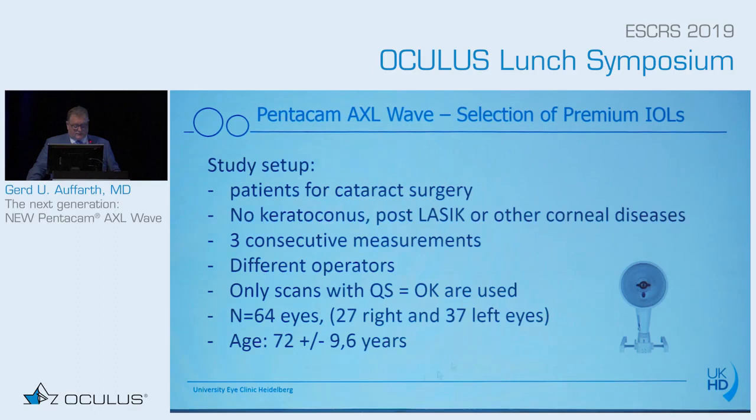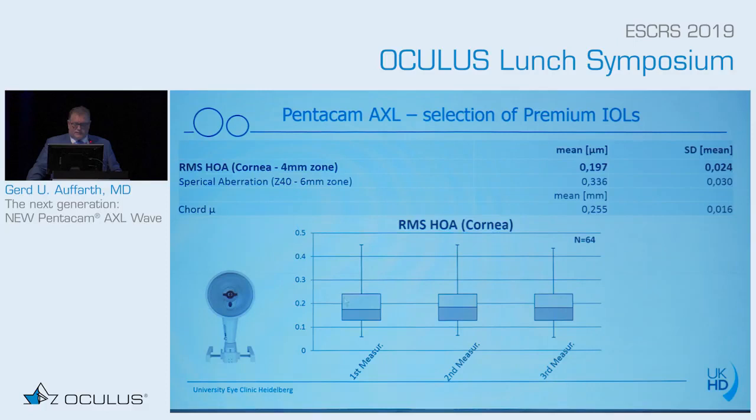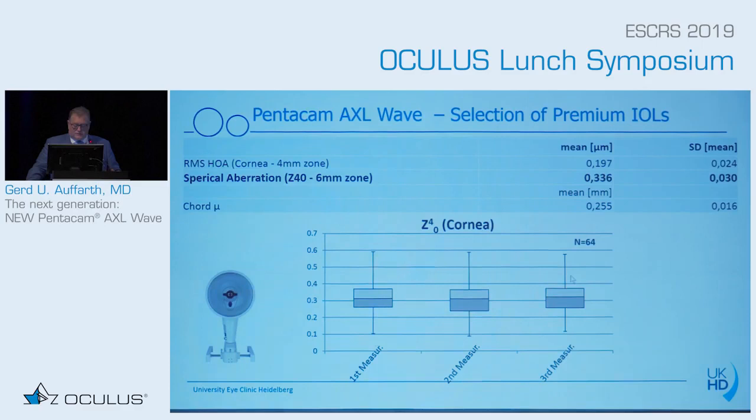Looking at high-order aberrations at a 4 mm corneal zone, you see the mean and standard deviation with almost identical measurements across first, second, and third measurements — very good repeatability. The spherical aberration also shows a normal standard deviation and very similar first, second, and third measurement values, confirming very good consistency.